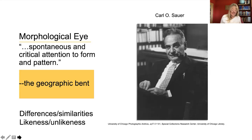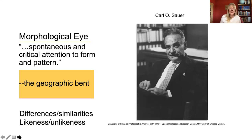This geographic bent manifests itself by, among other things, liking maps, enjoying travel, a curiosity about why things are where they are and how they are, and an appreciation for landscape — both the natural environment and human-built landscapes. Thinking geographically, thus according to Sauer, includes observation with an eye — taking perspectives, looking to seek differences and similarities, likeness and unlikeness in the world.